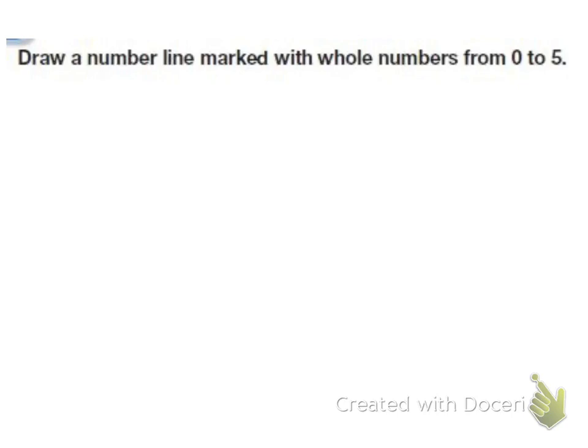This says draw a number line marked with whole numbers from zero to five. So I'm going to start off by drawing my line. And then I'm going to make a tick mark for the number zero. And now I'm going to make a tick mark for each number and try to make these as evenly spaced as possible. You can use a ruler to do this. I'm just going to do it freehand and do the best I can.